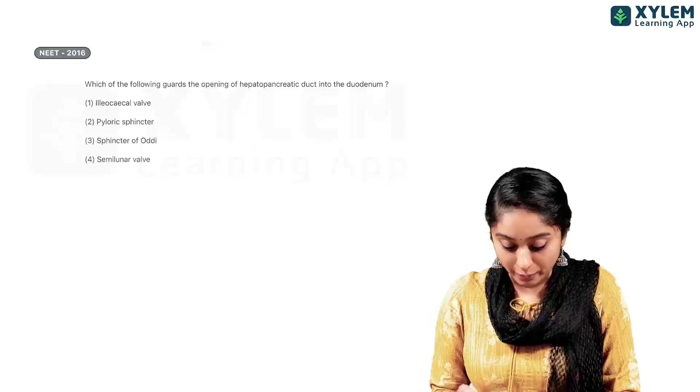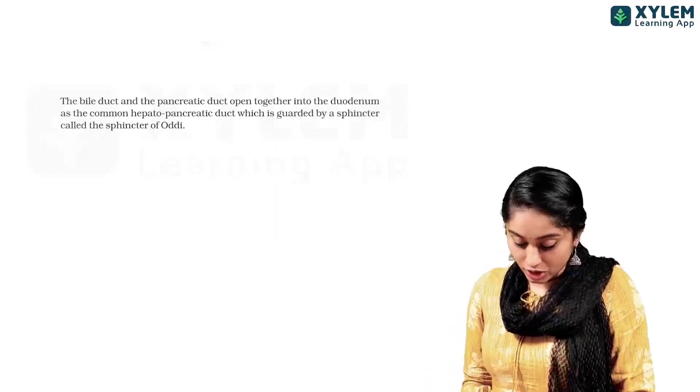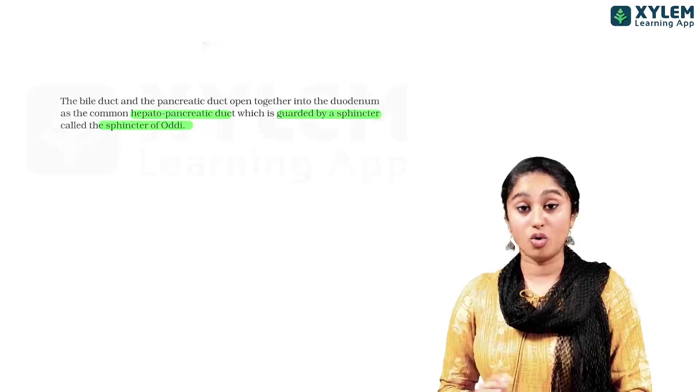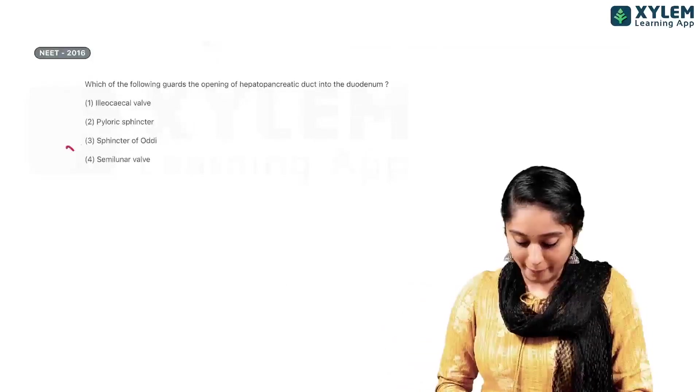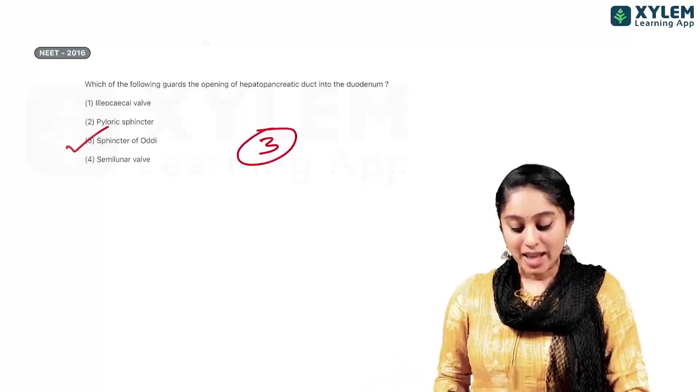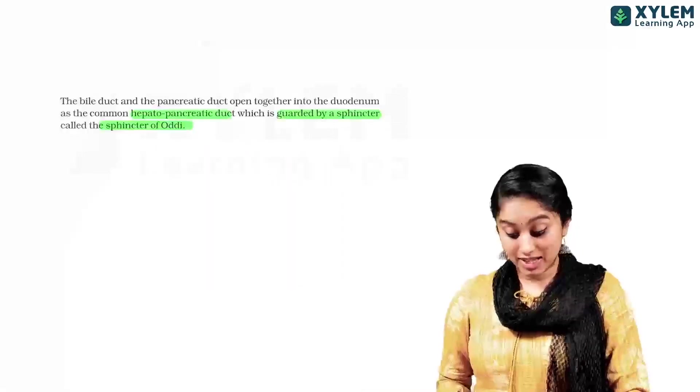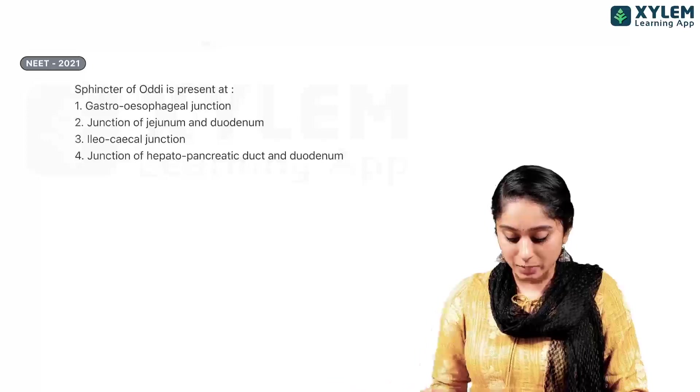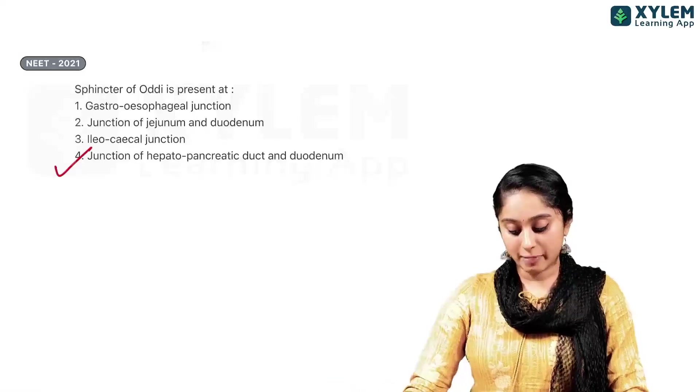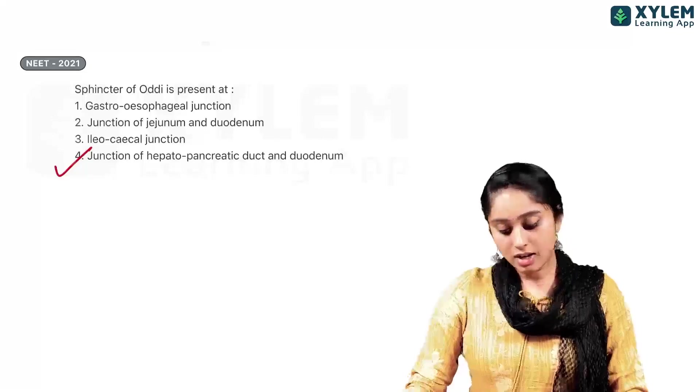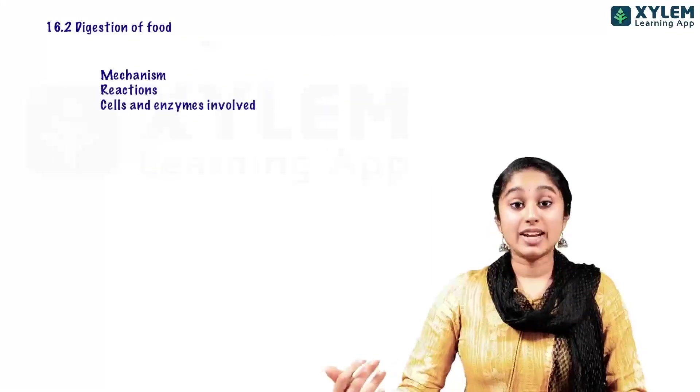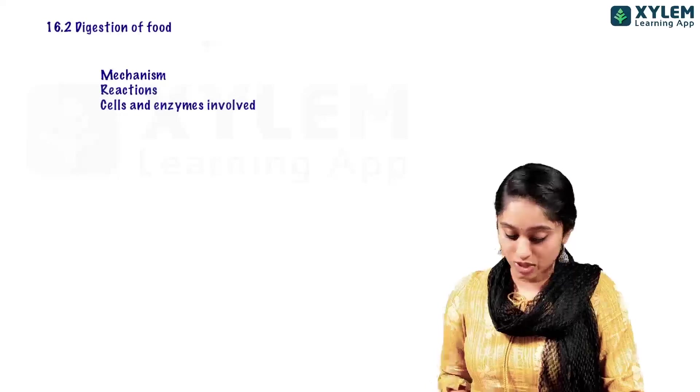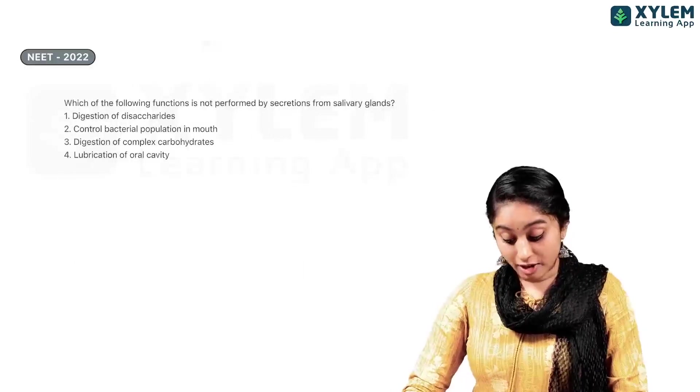So, the duodenum. So, again, directly there, the duodenum has a common hepatopancreatic duct, guarded by a sphincter called the sphincter of Oddi.